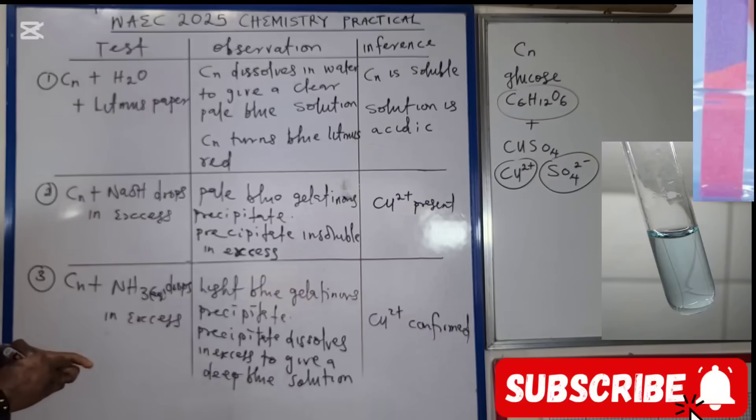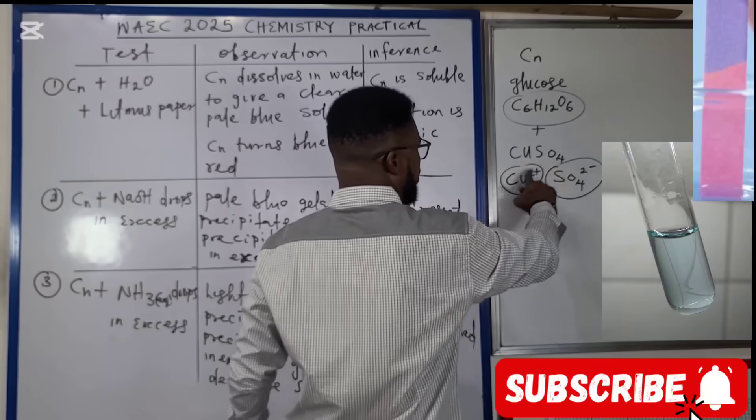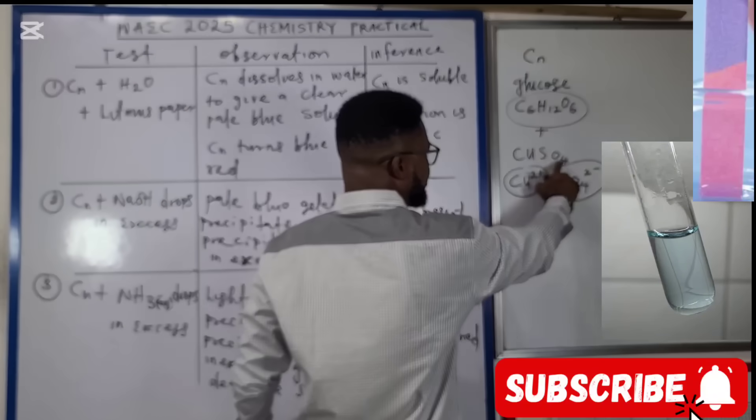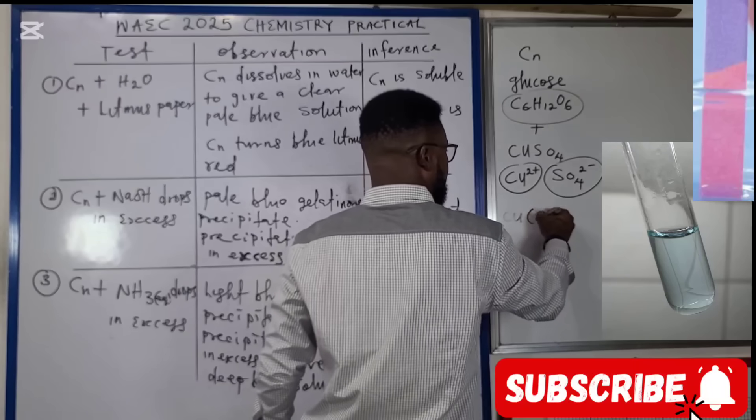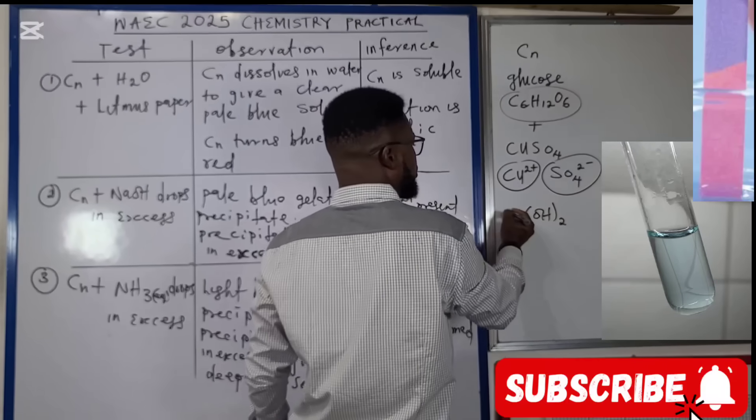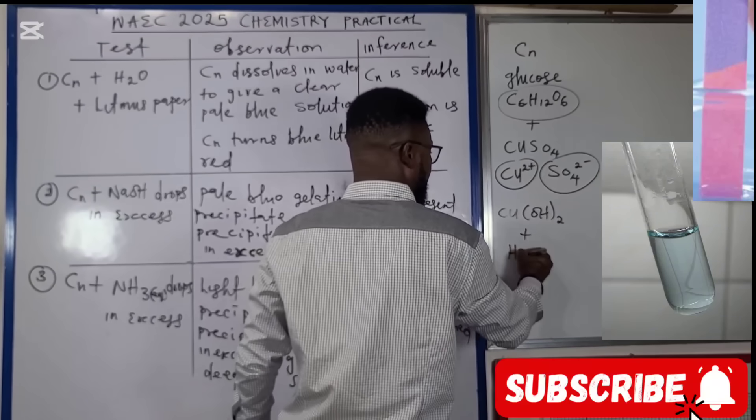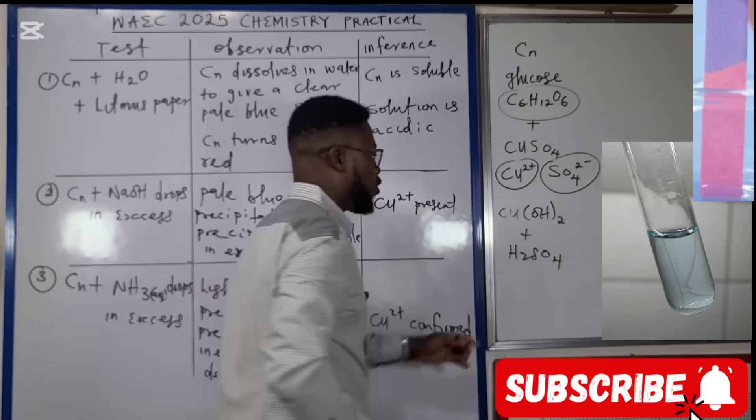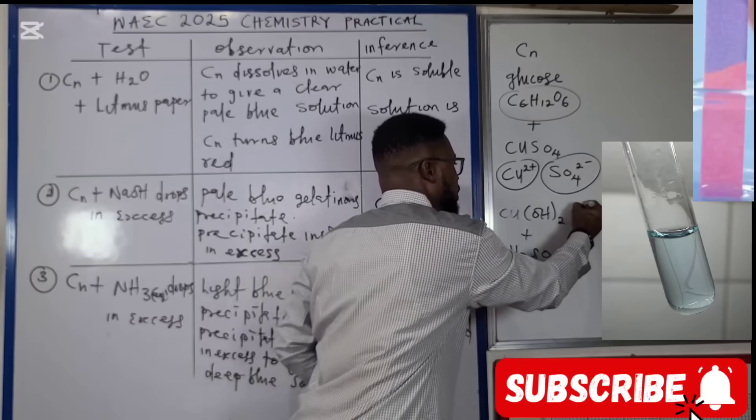When you test with a litmus paper, you recall when you look at copper sulfate, this salt must have been formed from copper hydroxide, which is not a strong alkali, and sulfuric acid H₂SO₄. When you look at this, it is a strong acid and this is a weak base.